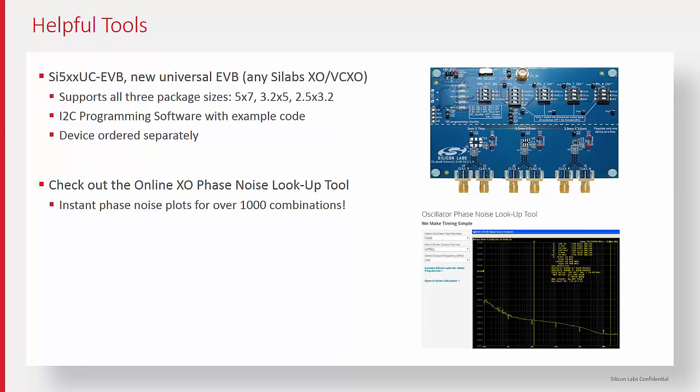That does sound useful, being able to go through those thousands of combinations for the oscillators. As a refresher, what are the key metrics that we should highlight when showing this plot to customers, either on their computer or, like you mentioned, the tablet or phone?